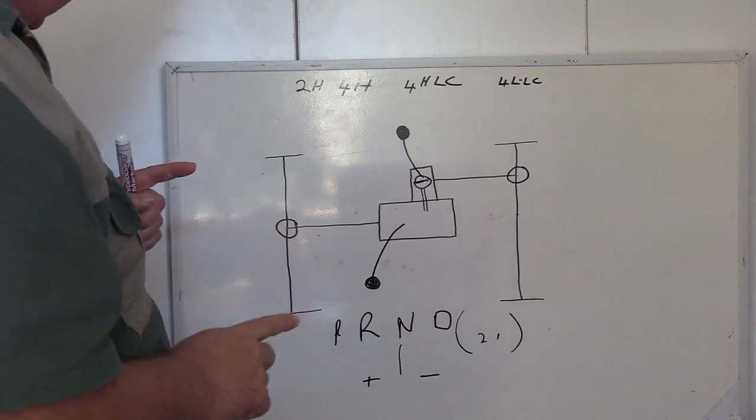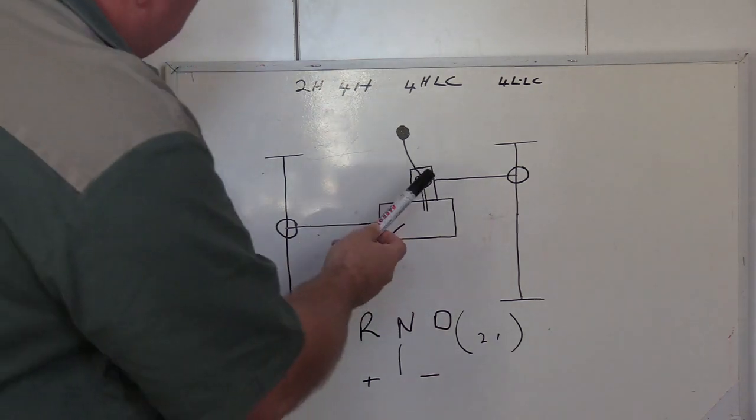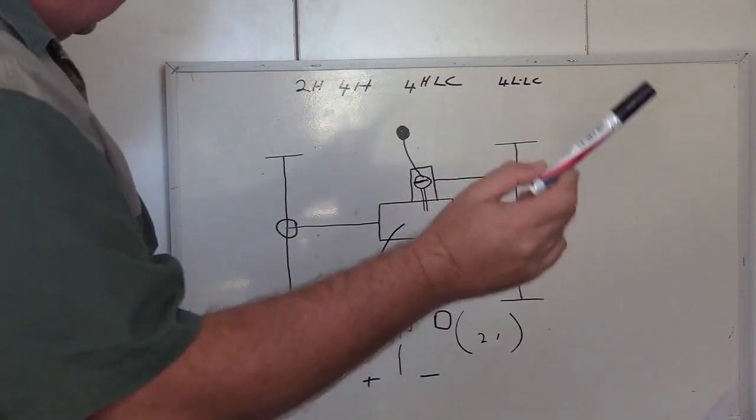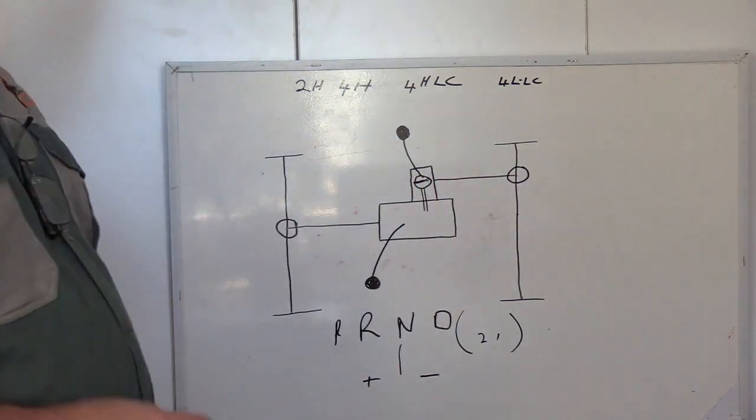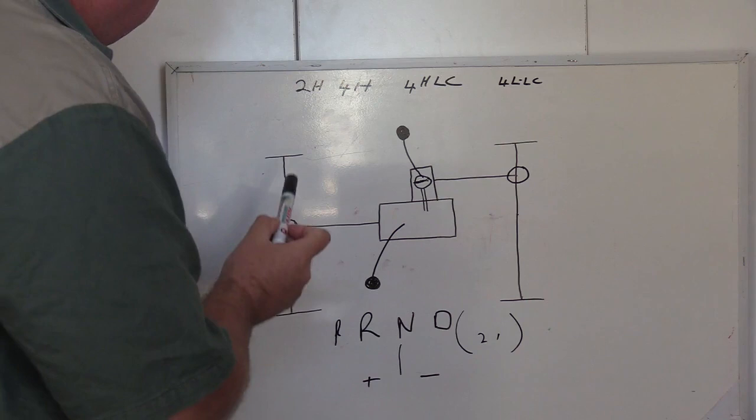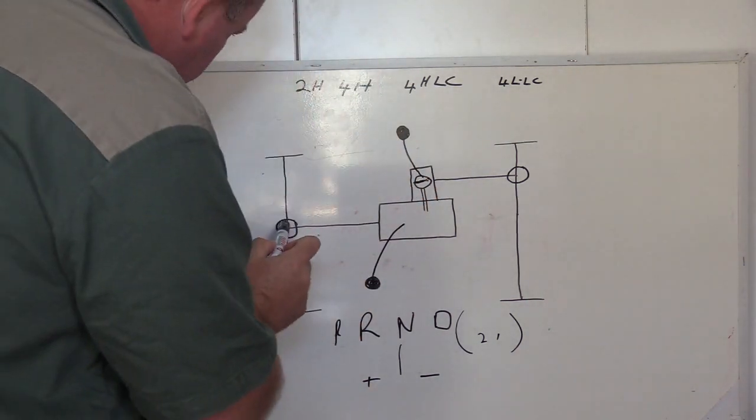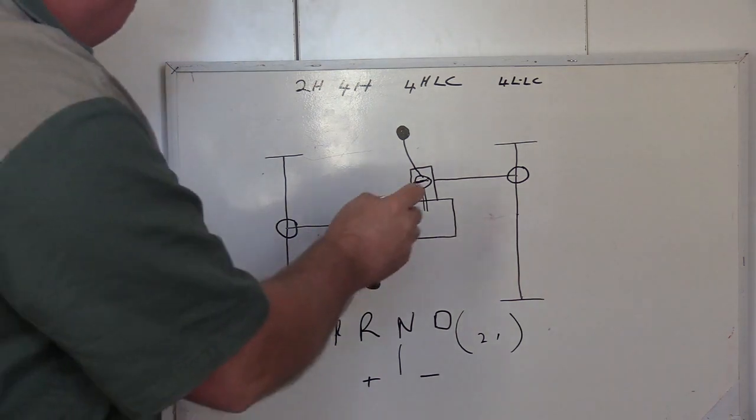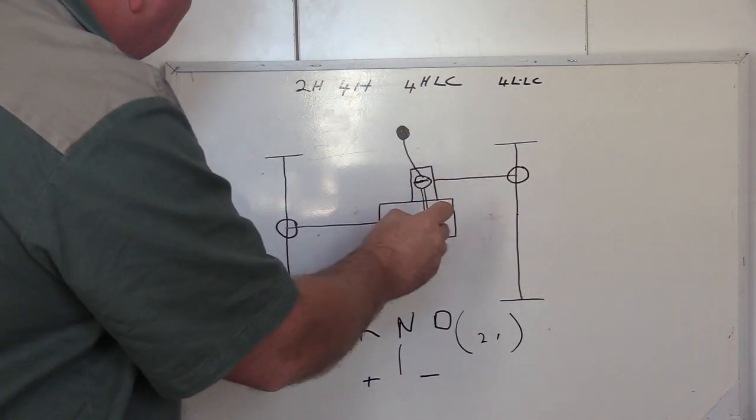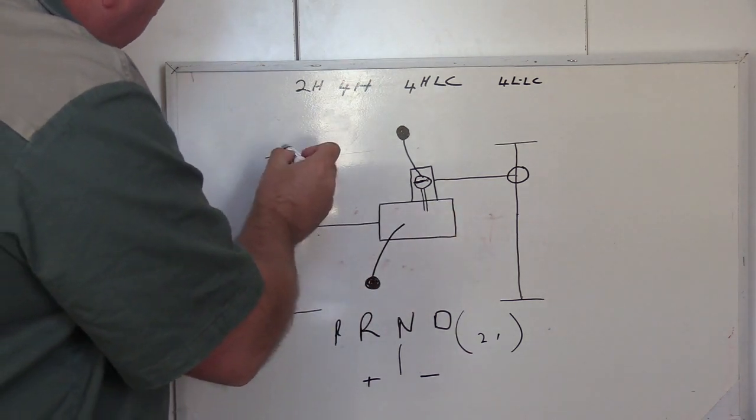So that's where a lot of people get confused. You get a diff lock for this diff, then you get a diff lock for your rear diff, and you get a diff lock for your front diff. So for argument's sake, if I had a diff lock there and a diff lock here, it means that the power will go equally to the front and the back.